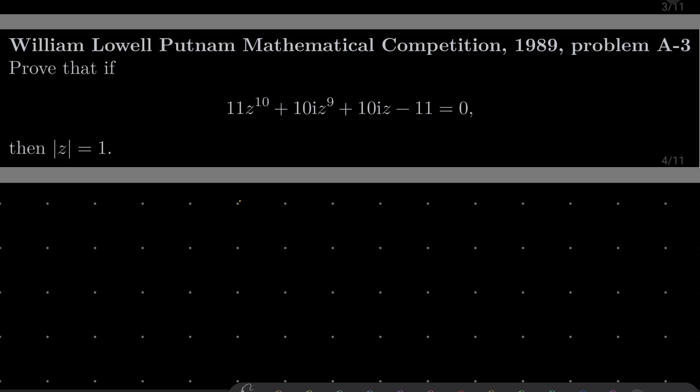Hello friends. In this video I'd like to solve the following problem from the William Lowell Putnam Mathematical Competition 1989, problem A3. We wish to prove that if 11z to the power of 10 plus 10i times z to the power of 9 plus 10i times z minus 11 equals 0, then the absolute value of z equals 1. We are considering this polynomial equation over the complex numbers, and i stands for the imaginary unit.